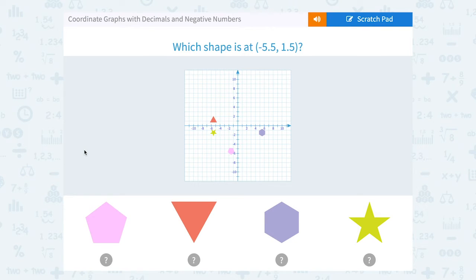Let's take a look at coordinate graphs with decimals and negative numbers. Which shape is at negative 5.5, 1.5?